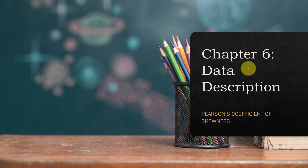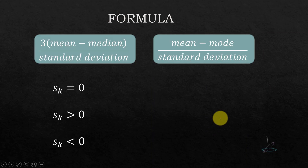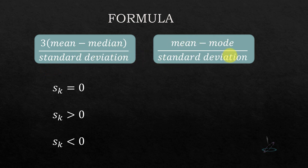This is Chapter 6, data description. Today we are going to learn about the Pearson coefficient of skewness. There are two formulas: you can either use three times mean minus median over standard deviation, or mean minus mode over standard deviation.